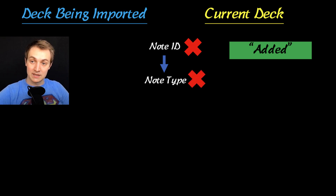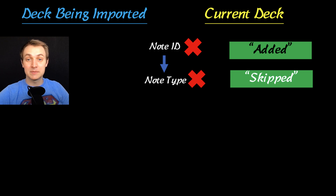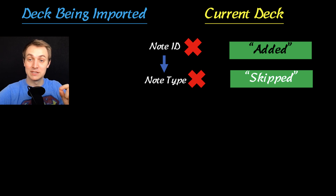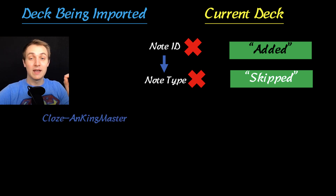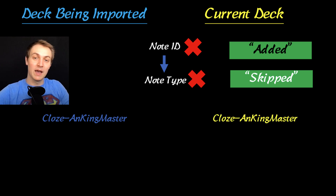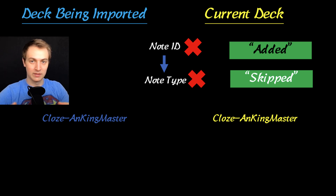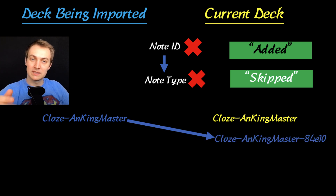If the note type doesn't match, then it's going to say that it skipped the card. It's not going to update it because the note type doesn't match. Without this update, you would have a flashcard with a note type name, and if yours was different from the one being imported — for example, new fields were added — then Anki would import it with the same name and add a bunch of numbers and letters at the end, just so that you know it's a different note type.